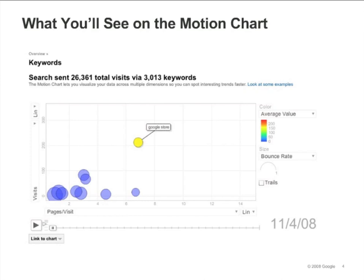In this motion chart, you can see right away that one keyword is much more valuable than the others.